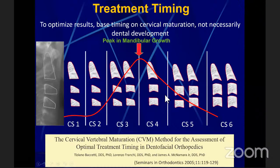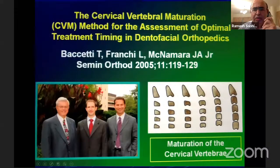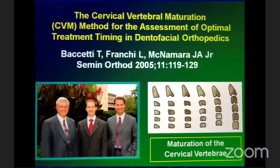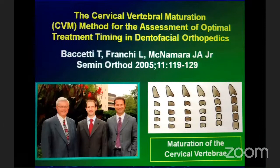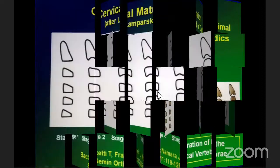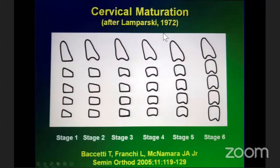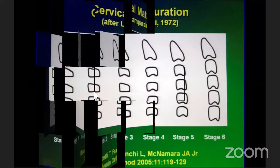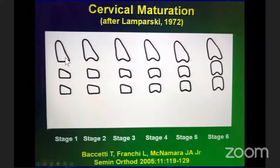I am going to discuss the cervical vertebral maturation (CVM) method for assessment of optimal timing in dentofacial orthopedics. There are six stages: CS1 and CS2 are pre-pubertal, CS3 and CS4 are pubertal, and CS5 and CS6 are post-pubertal. Between CS3 and CS4 we have the peak in mandibular growth. A lot of foundational work was done by Don Lamparski from the University of Pittsburgh, and later improved upon by Baccetti, Franchi, and McNamara. They published in AJODO as well as in Seminars in Orthodontics.